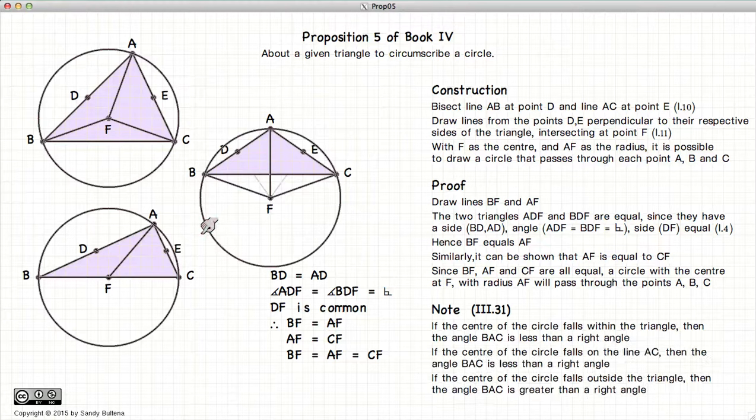Now we should make a note that if the center of the circle falls within the triangle, then the angle BAC is less than a right angle. If the center of the circle falls on the base of the triangle, then the angle BAC is a right angle.